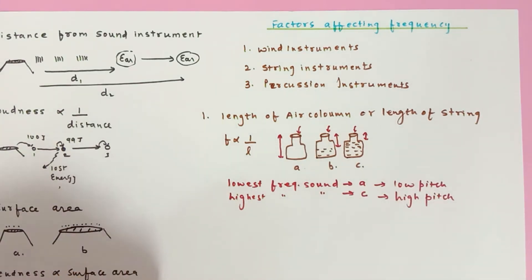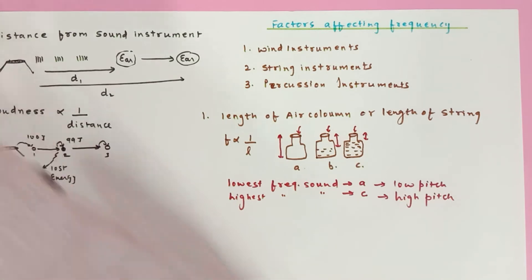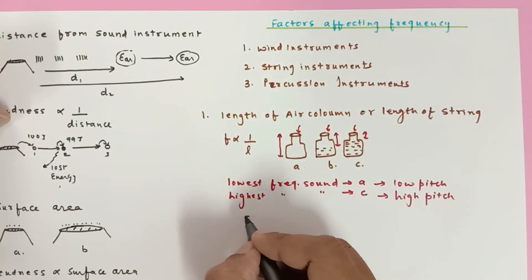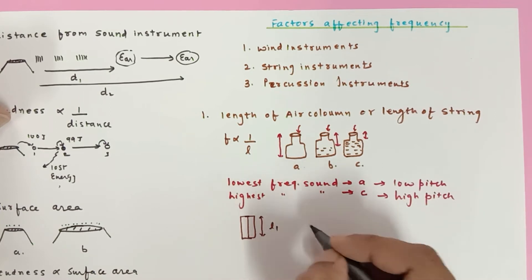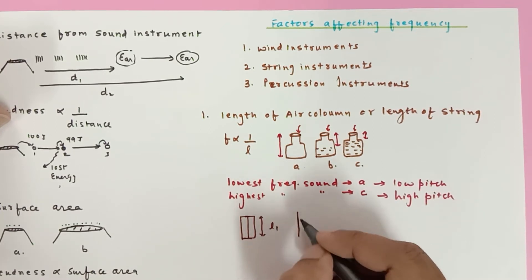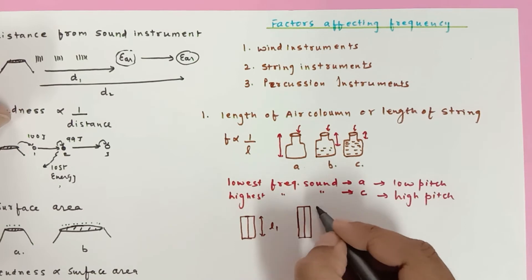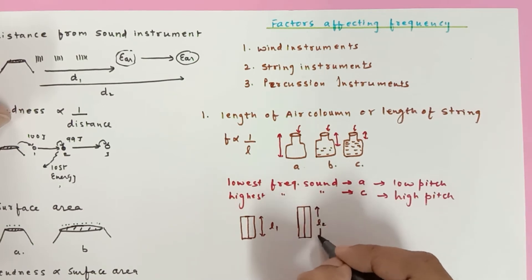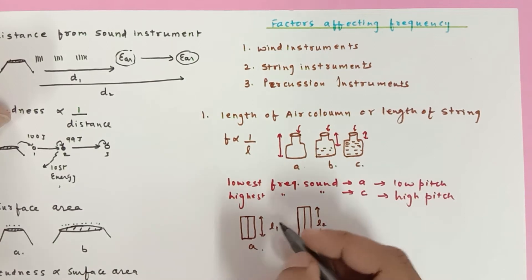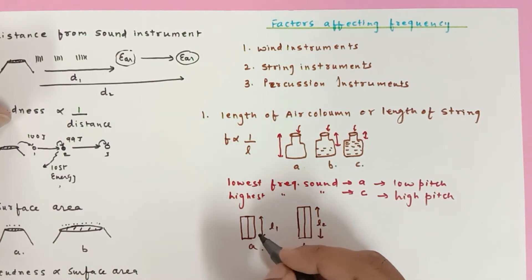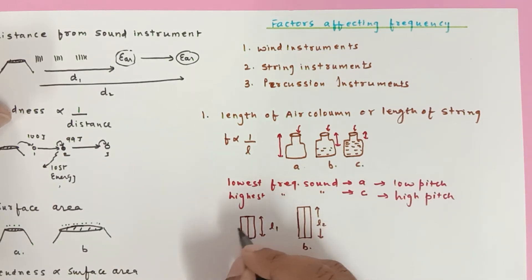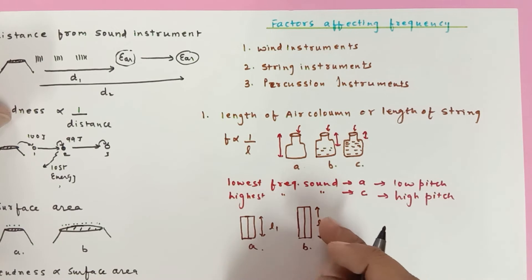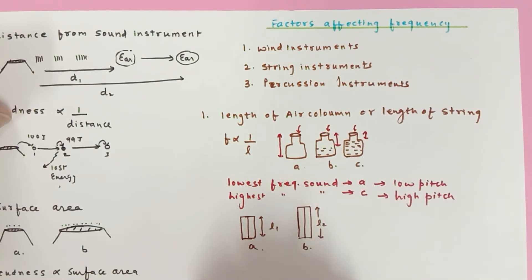The same principle applies to string instruments. If guitar A has a string of shorter length L1, and guitar B has a longer string of length L2, then guitar A produces high frequency or high pitch sound, while guitar B produces comparatively low frequency or low pitch sound.